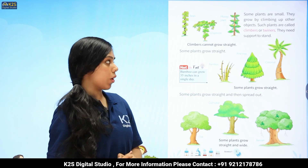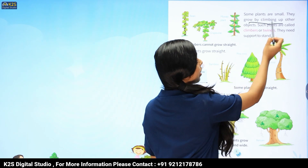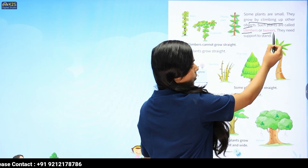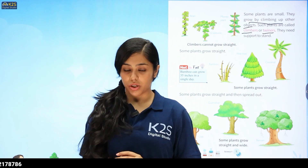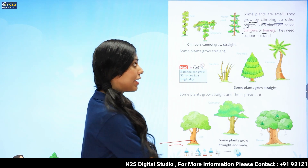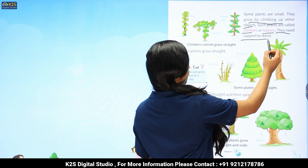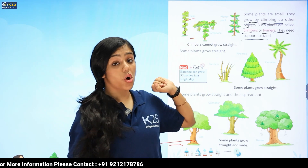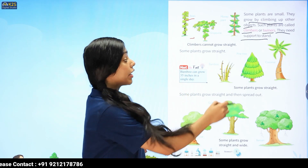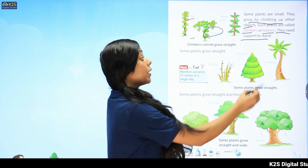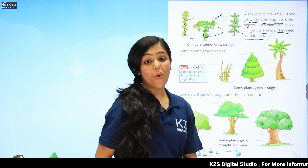Okay, so some plants are small. They grow by climbing up other objects, such as climbers. Jisko hum climbers bhi bolte hai. Woh khud se grow nahi ho sakte. Unko kisi ki support ki zaroorat hoti hai, kisi doosre plant ki. Toh, they are called climbers. As I have just said, they need support to stand. So, here we have our example: bean. Bean is also a climber. Next one is grapevine. Grapevine bhi ek climber hota hai. Next, money plant. Money plant is also a climber.